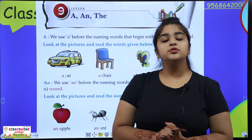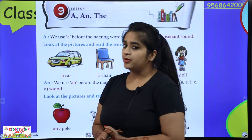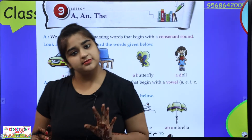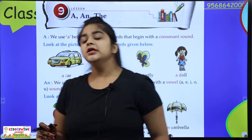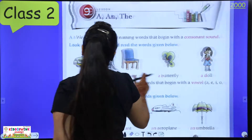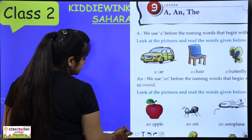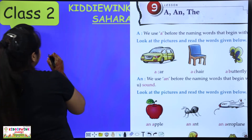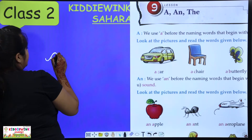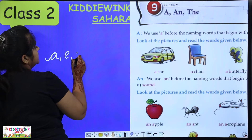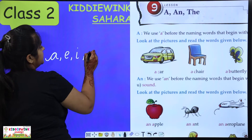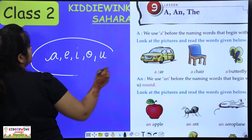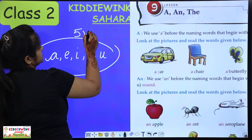So, where is A used? Do you know how many letters are in our English alphabet — A to Z? What are our vowels? Do you know how many vowels there are? Our vowels are A, E, I, O, U. These five are our vowels.